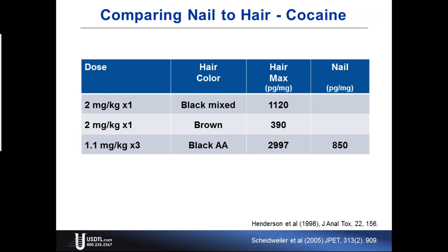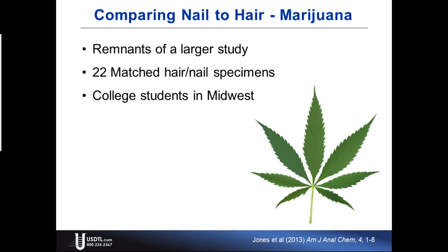Hair color is a big variable when testing for alkaline compounds — again, the amphetamines including methamphetamines, the opiates, PCP, and many other compounds in our panel. This phenomenon does not apply to acidic drugs. The most prevalent acidic drug we look for is marijuana. Carboxy THC is slightly acidic, and the interaction between an acidic drug and melanin is nonexistent — demonstrated in many studies. So for marijuana, hair color is not a variable.